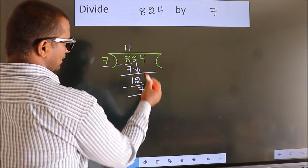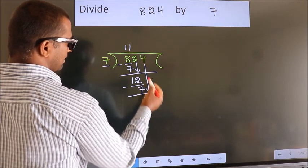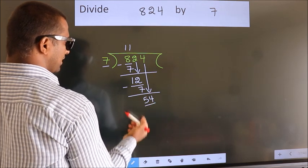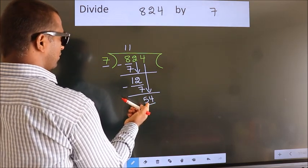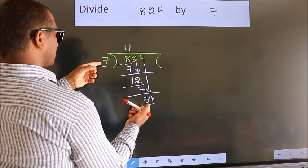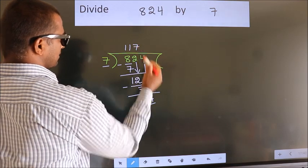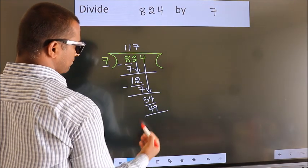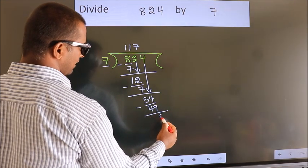After this, bring down the beside number. So 4 down. So 54. A number close to 54 in 7 table is 7 sevens 49. Now we subtract. We get 5.